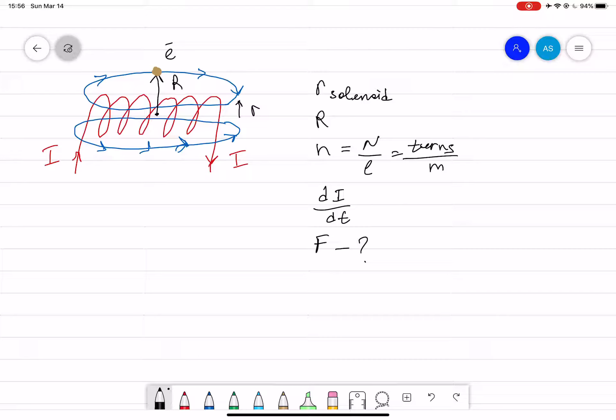the current in the solenoid is ramped up at the rate of 45 amperes per second? Now the electron is sitting, we have a magnetic field, current is ramping up, and we have to find the force on that electron.